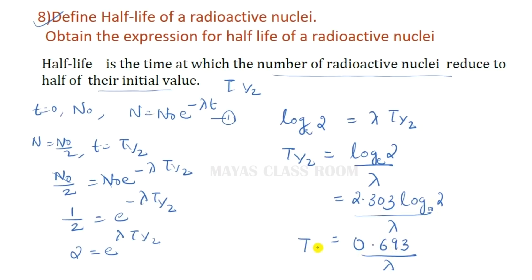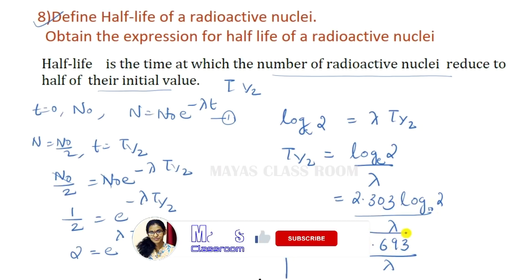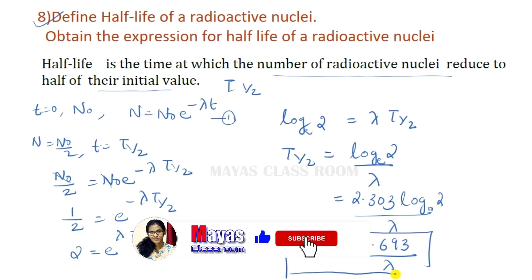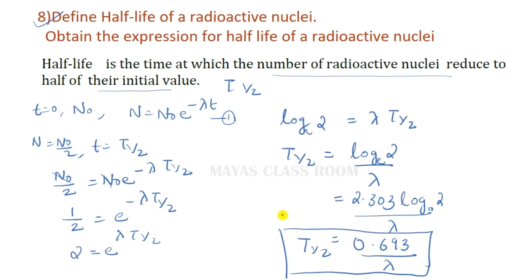This is the expression for half-life period T½ = 0.693/λ, where λ is the disintegration constant.